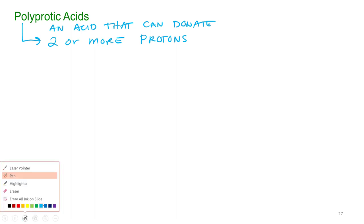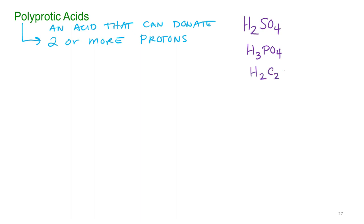So one very important polyprotic acid that we've already been talking about and using is H2SO4. For acids, we're always going to write out that H out front, and usually if it has more than one H out front, it's probably going to be polyprotic. Other examples would be like phosphoric acid, H3PO4, oxalic acid, which you'll use in the lab on Thursday, H2C2O4.